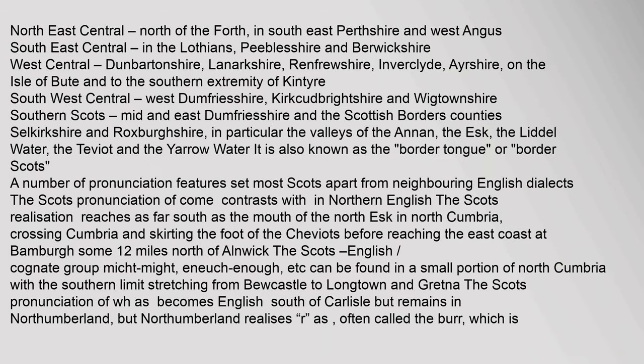Scottish regional varieties include North East Central (south of Perthshire and West Angus), South East Central (in the Lothians, Peebleshire, and Berwickshire), West Central (Dunbartonshire, Lanarkshire, Renfrewshire, Inverclyde, Ayrshire, and the Isle of Bute), South West Central (West Dumfriesshire, Kirkcudbrightshire, and Wigtownshire), and Southern Scots (Mid and East Dumfriesshire and the Scottish border counties of Selkirkshire and Roxburghshire), also known as the Border Tongue or Border Scots.